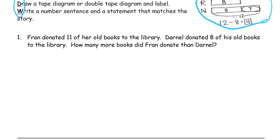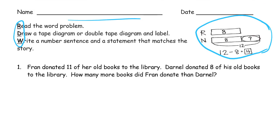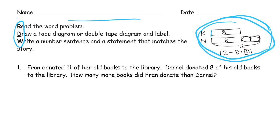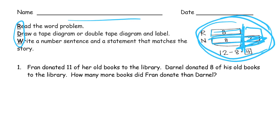In our story we have two characters, Fran and Darnell, and they both donate books to the library. One of them donated more than the other and we know exactly how many more, so we're comparing two different amounts. Just like if you're comparing the length of two pencils to see which one is longer, you'd hold them next to each other with the ends matched up so you can see which one sticks out longer — we're going to draw our tape diagram the same way.